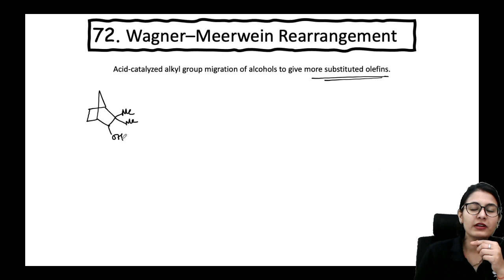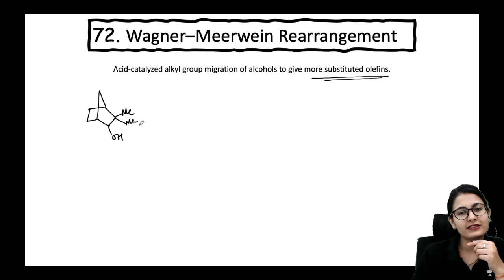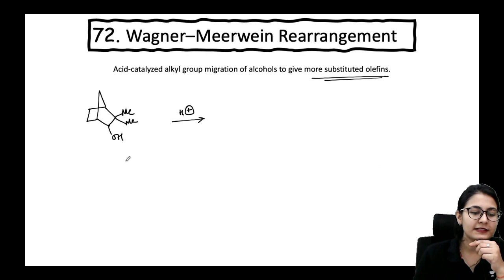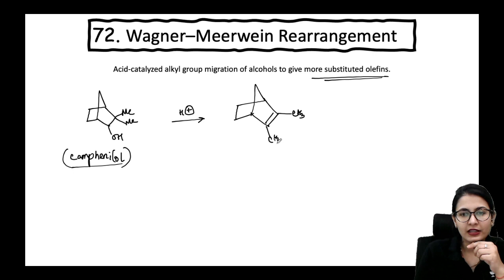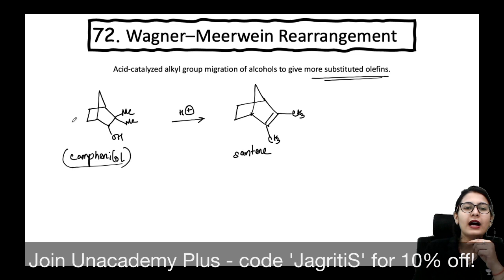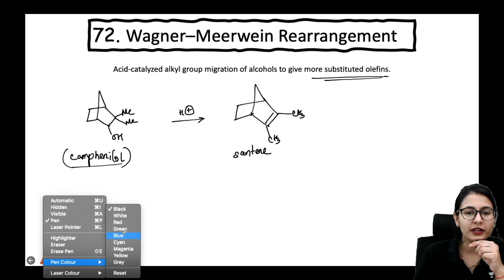This Wagner-Meerwein Rearrangement has been asked plenty of times in CSIR NET, GATE, or any competitive examination. It is also there at BSc level and IIT JEE level. So, given this molecule — its name is Camphanol — in the presence of an acid, you are going to get the rearranged product. The name of this alkene product is Santene.